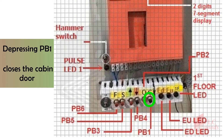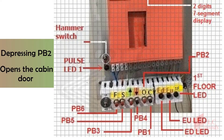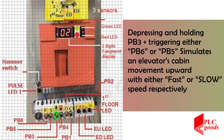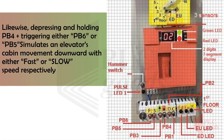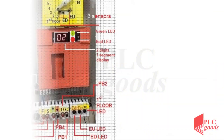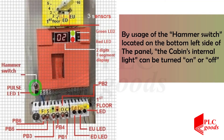Depressing PB1 closes the cabin door. Depressing PB2 opens the cabin door. Depressing and holding PB3 plus triggering either PB6 or PB5 simulates the elevator cabin's movement upward with either fast or slow speed respectively. Depressing and holding PB4 plus triggering either PB6 or PB5 simulates the elevator cabin's movement downward with either fast or slow speed respectively.